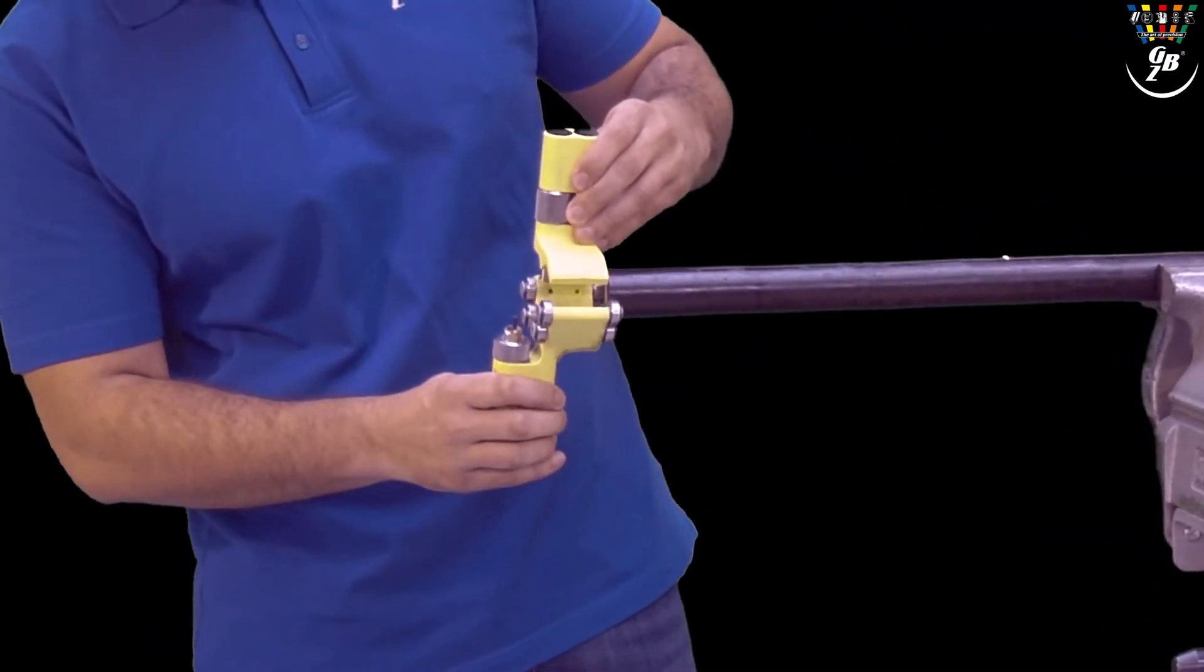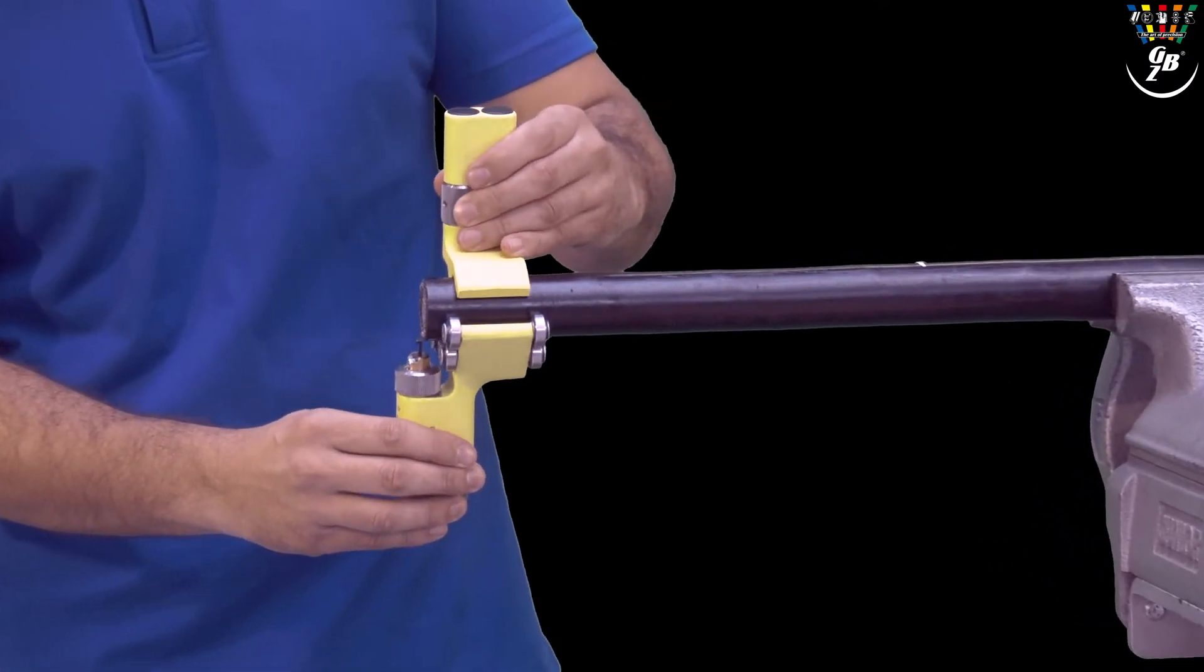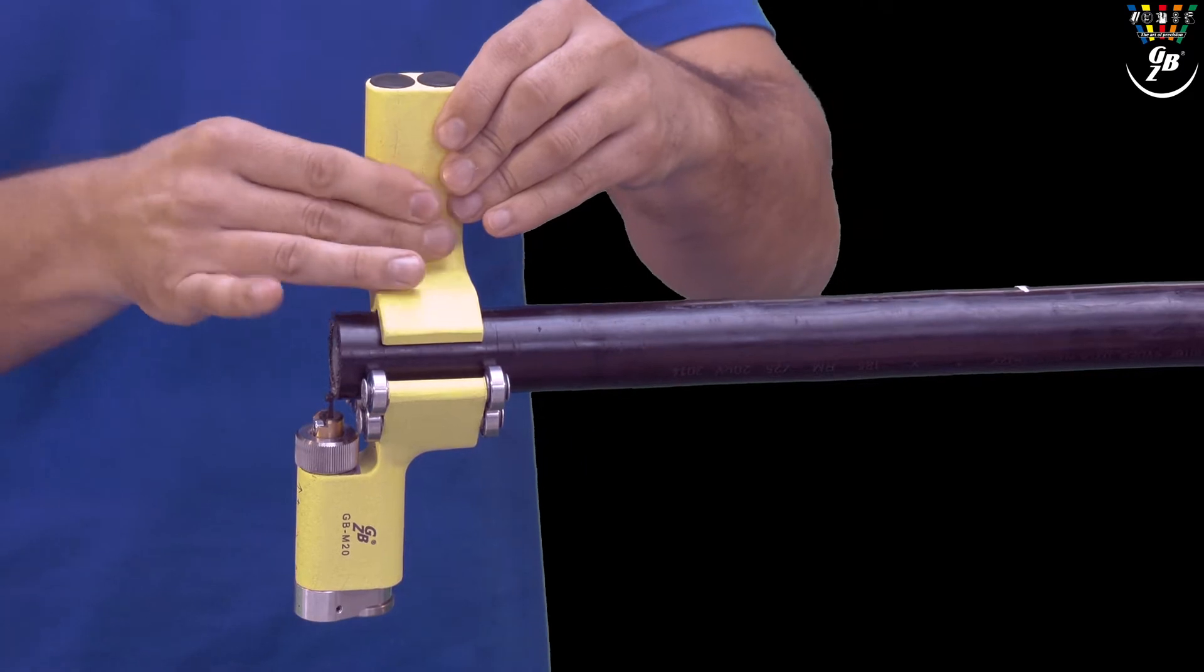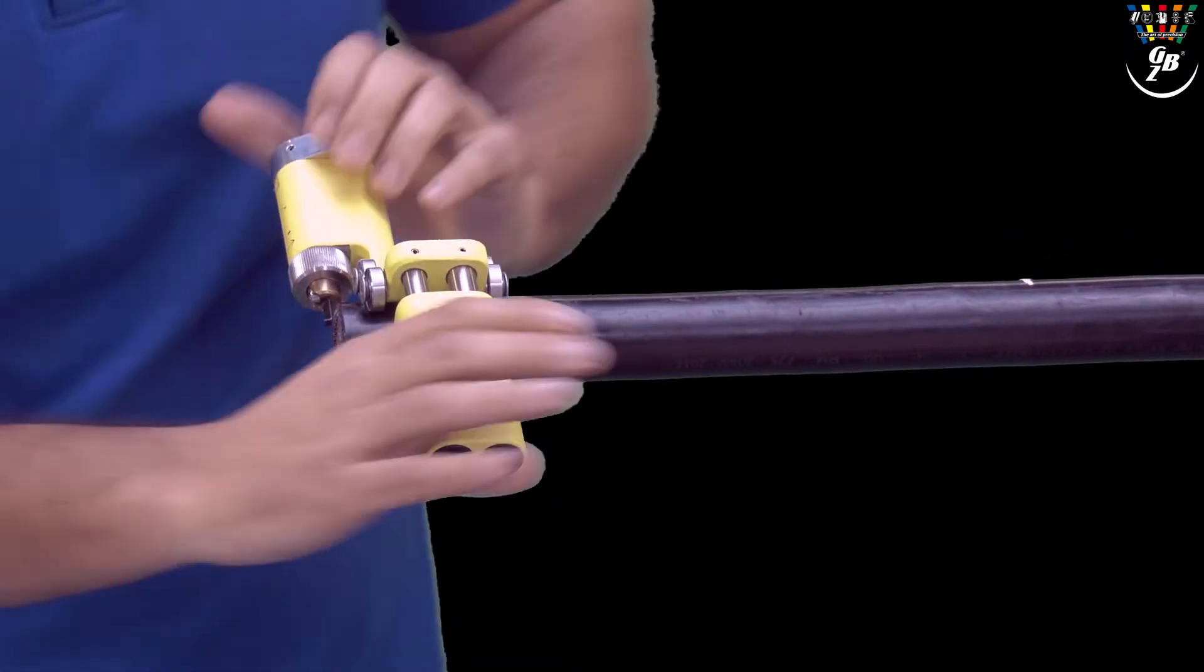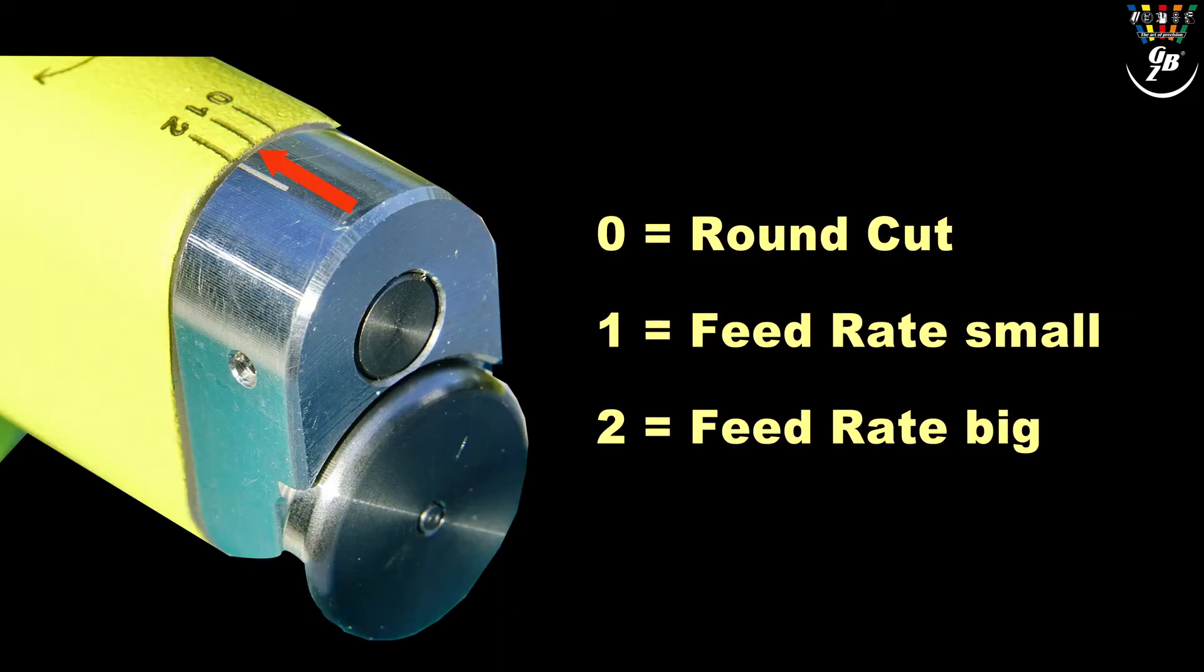To remove the outer sheath we take the sheath cutter GBM20 and mount it to the cable. To check the correct position of the rollers on the cable we turn the tool half a turn forwards and backwards and tighten it if necessary.